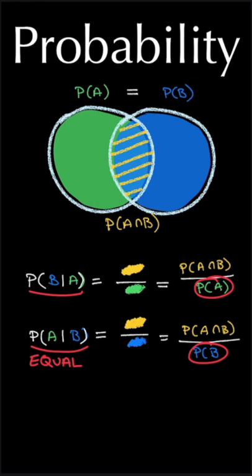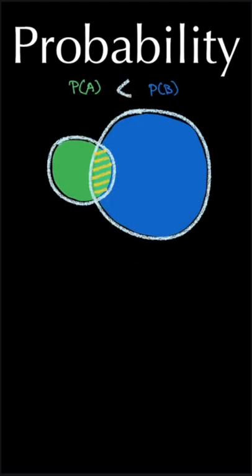When PA and PB are not equal, however, this is not the case, but visually, we can immediately see why. The conditional probability is the relative size of the intersection compared to PA or PB.